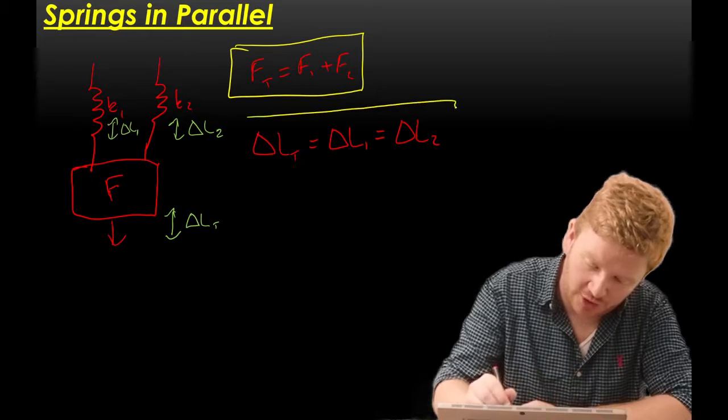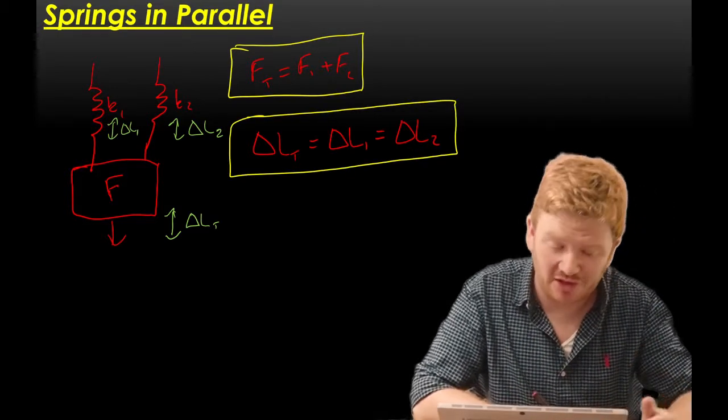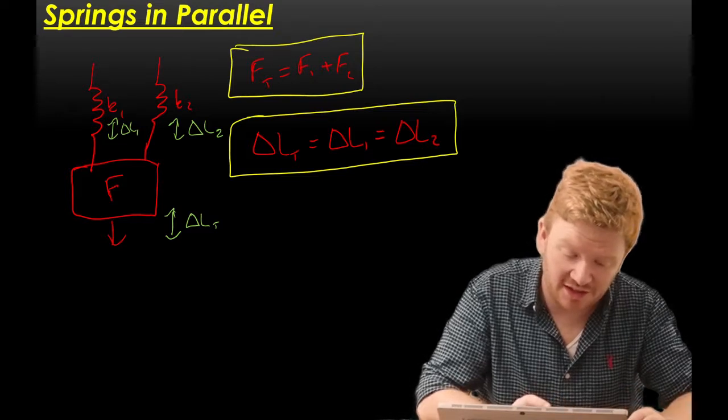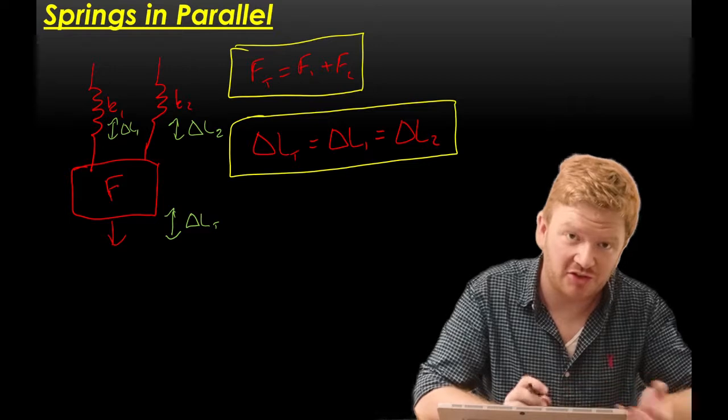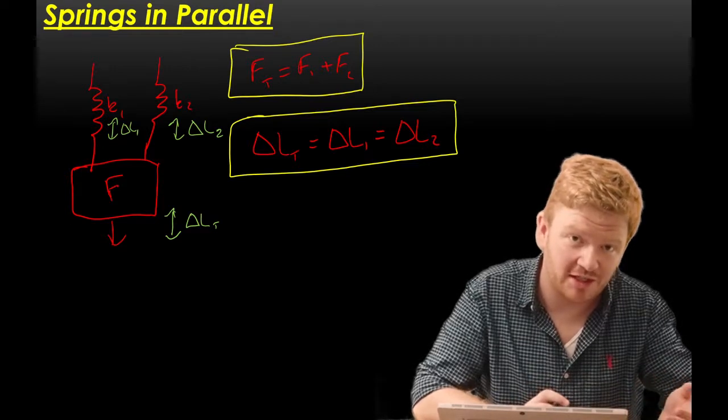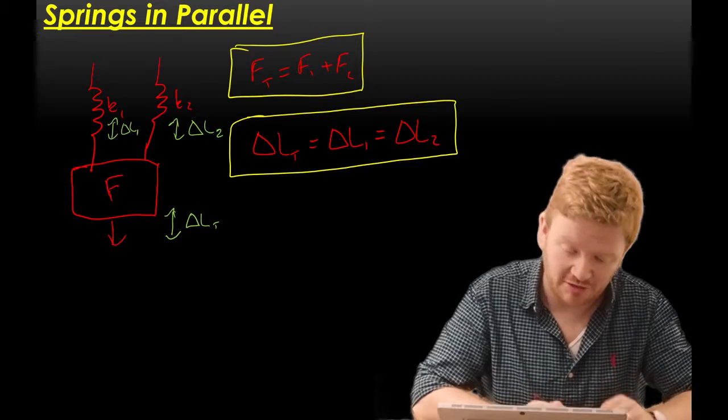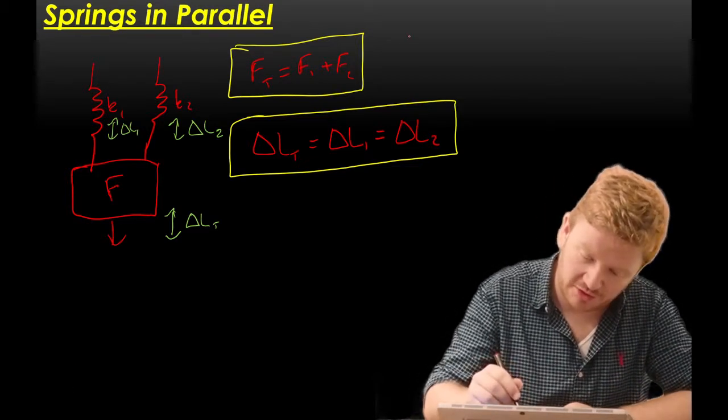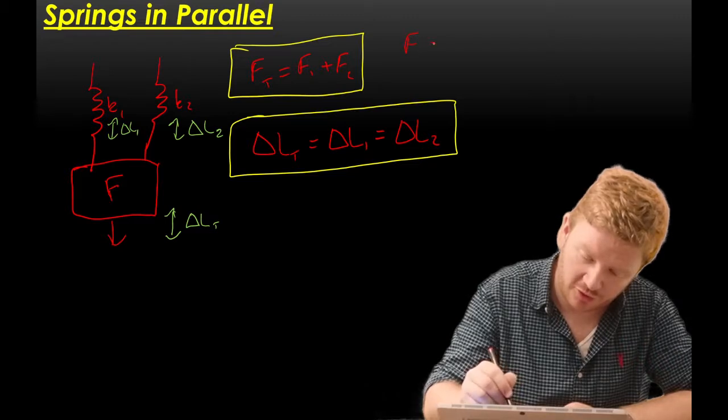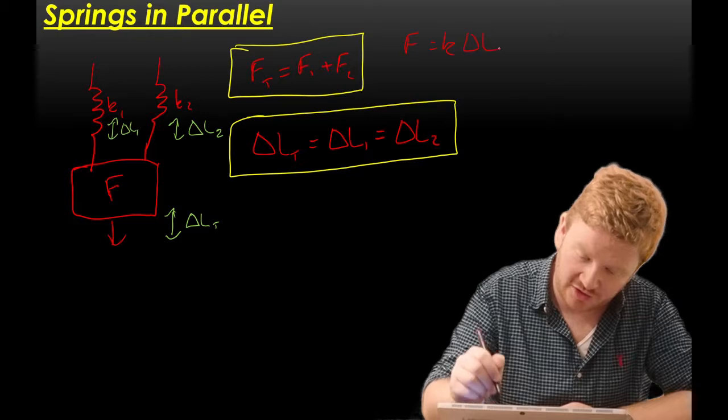So you can see I've kind of got the opposite of what I had before. In the springs in series, I said that the force on both of them is identical, whereas the total extension is made up of the extension of 1 plus the extension of 2. Well, here I've done that the other way around. So the same thing, let's just give ourselves a little reminder of Hooke's Law. Hooke's Law is that the force on a spring is equal to k delta L.